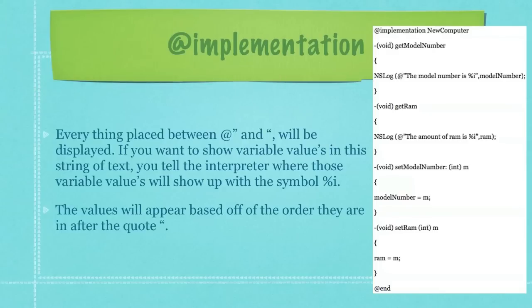If you want to show variable values in this string of text, you tell the interpreter where those variable values will show up with a symbol such as I use here, which is a percentage sign followed by the letter I. And those values will appear based off of the order they are in after the closing quote.